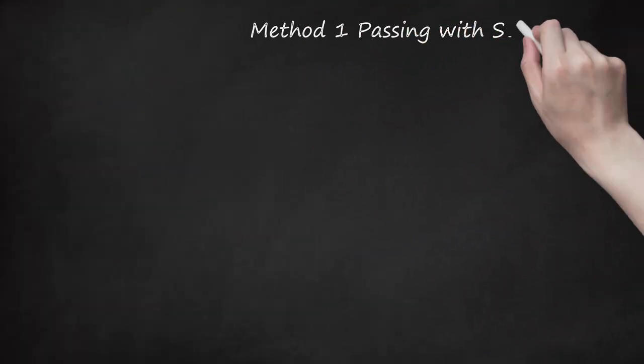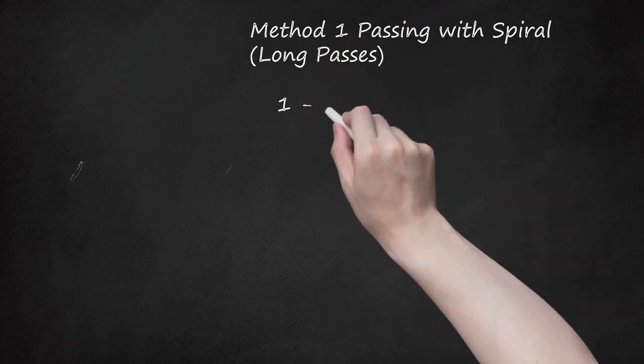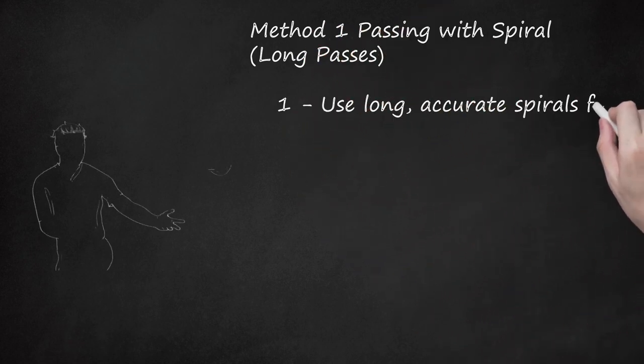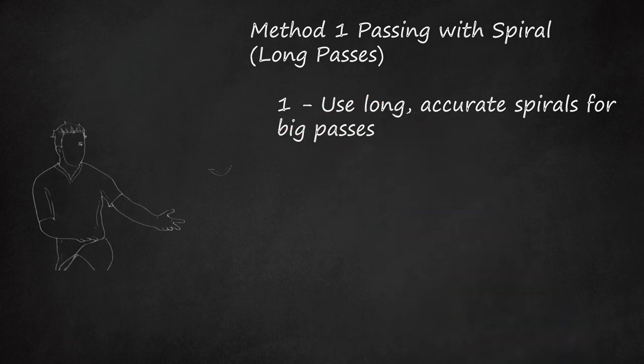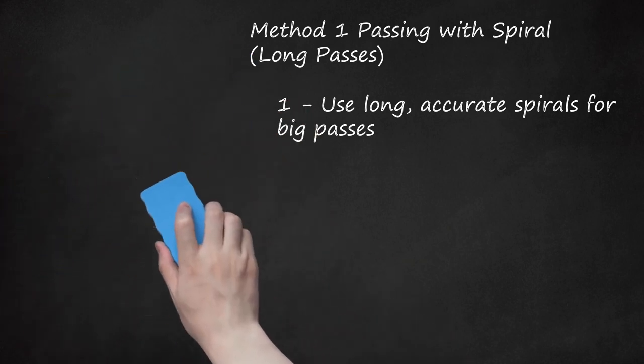Method 1: Passing with Spiral (Long Passes). Use long, accurate spirals for big passes. A clean spiral is essential, especially for the scrum and fly halves. A spiral is the classic across-the-body throw, where a player uses their arms and a quick snap of the wrist to quickly launch the ball as far as possible. Accuracy is always more important than spin. You should focus on hitting your target before getting the spin right. If you're doubtful about your ability to pull off a long throw, take the ball into a tackle. You'll maintain possession of the ball, which is far more valuable than risking a difficult pass.